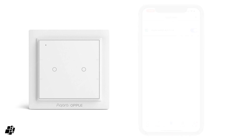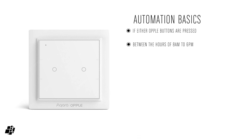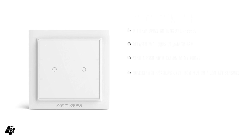So there's my automation. Basically, if somebody presses either of those buttons between certain times of the day — which would typically be a work day — then I'll get a notification. Now you can't do that in HomeKit; you can only get notifications for motion or a contact sensor, for example. With the Aqara app you can have a switch be pressed and then get a notification, which is quite handy.